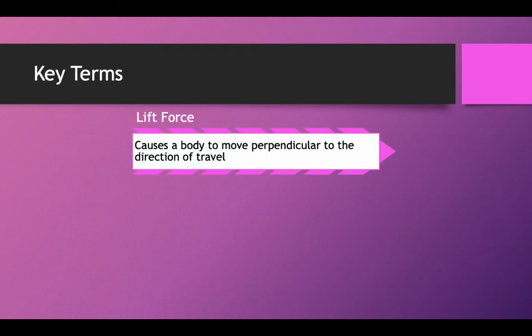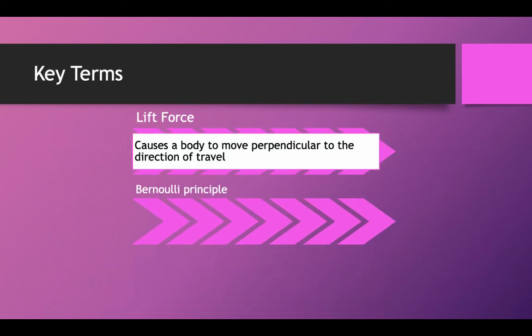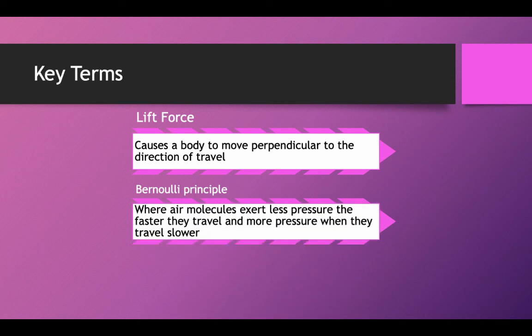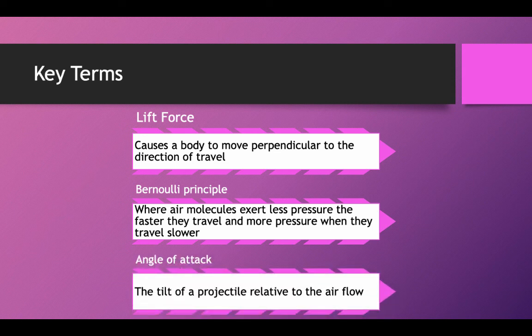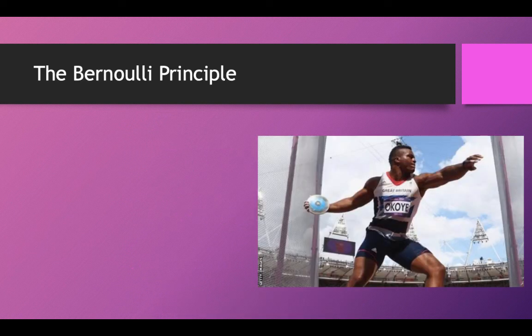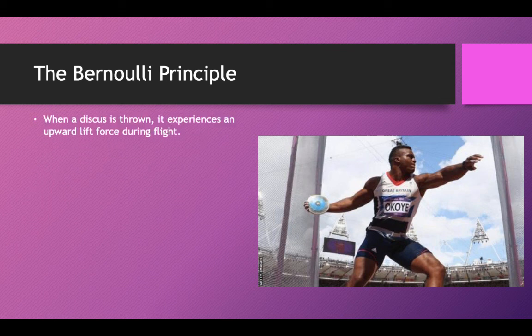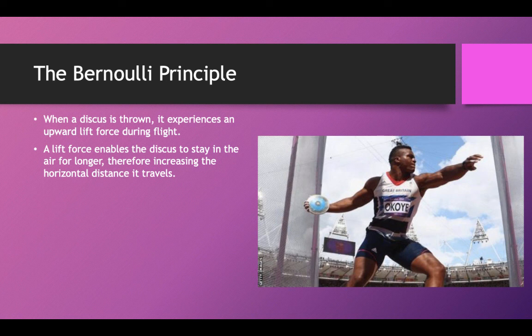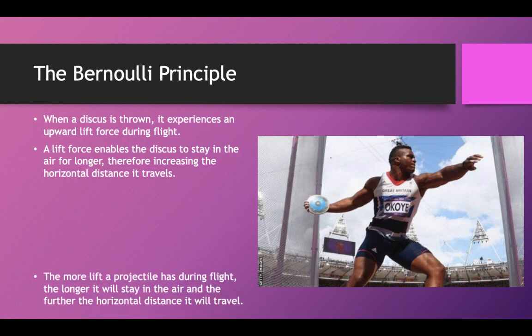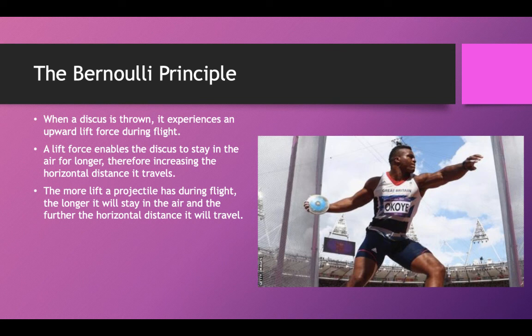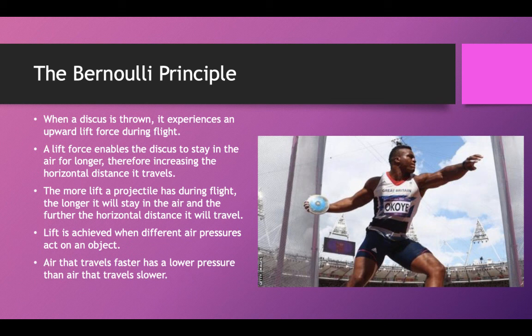Lift force causes the body to move perpendicular to the direction of travel. Key terms: the Bernoulli principle — where air molecules exert less pressure the faster they travel, and more pressure when they travel slowly. Angle of attack — the tilt of a projectile relative to the airflow. When a discus is thrown, it experiences an upward lift force during flight. A lift force enables the discus to stay in the air for longer, therefore increasing the horizontal distance it travels. Lift is achieved when different air pressures act on an object — air that travels faster has a lower pressure than air that travels slower. This is the Bernoulli principle.